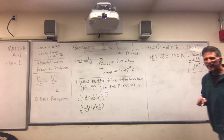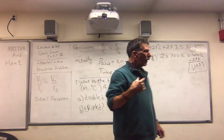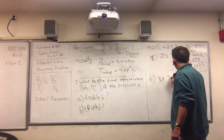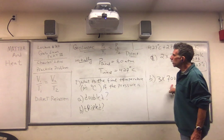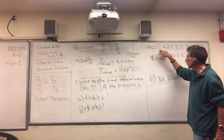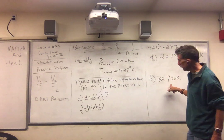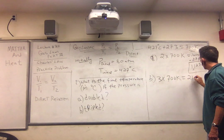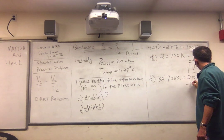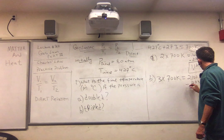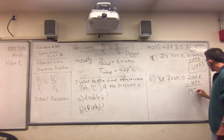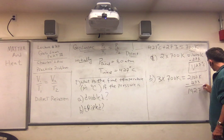Next: let's triple — triple the pressure. Three times 700 Kelvin. We've got to triple the temperature — not the Celsius temperature but the Kelvin temperature — and we get 2,100 Kelvin. What do we do? We subtract 273. That's 1,927 degrees Celsius. Check my math, but just subtract.